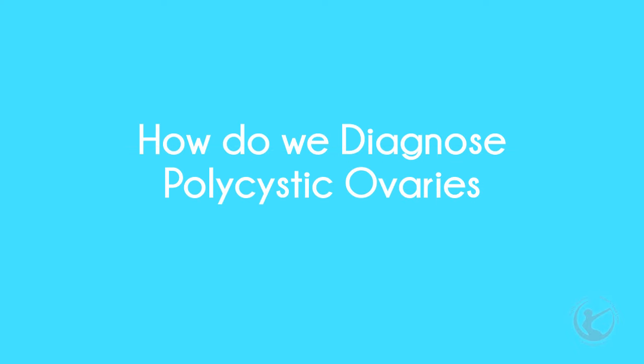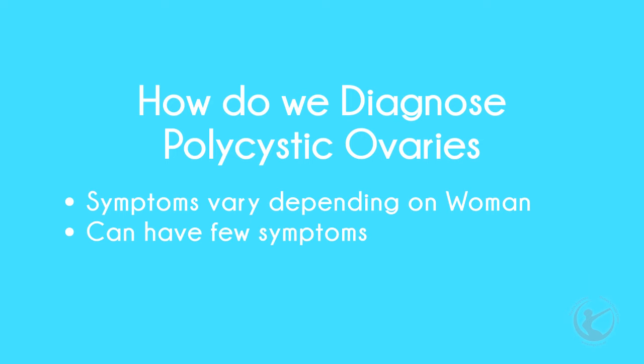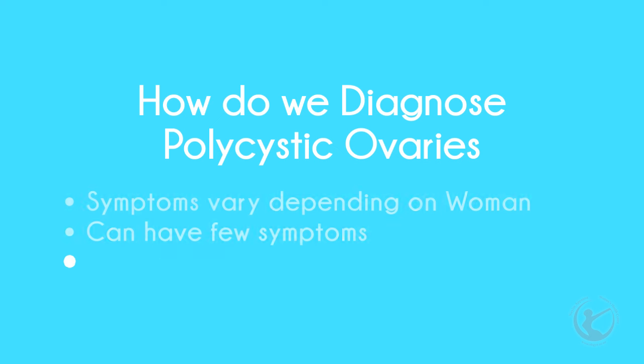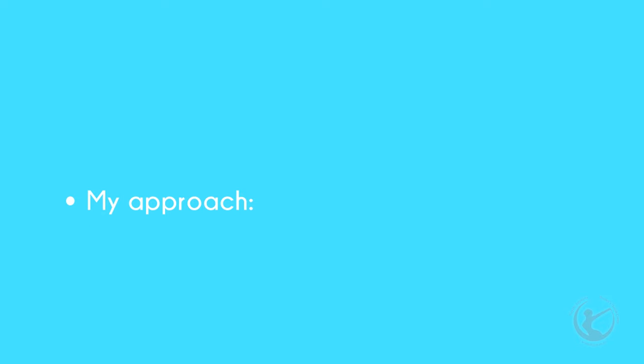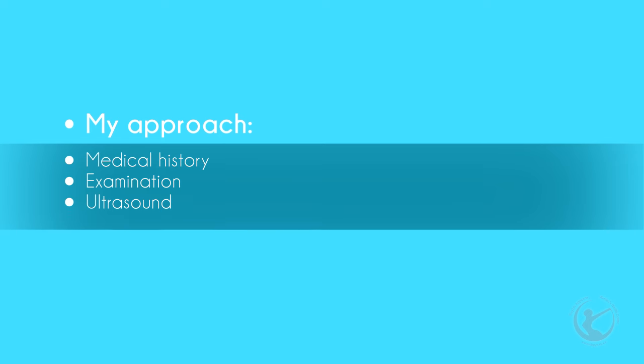How do we diagnose PCOS? There is a large discrepancy in the literature regarding how to diagnose polycystic ovaries. I firmly believe that the disease manifests itself differently in different women, where some people have very little symptoms, others have a few, and yet others have the full-blown disease. My approach is the following: I take a medical history, I do an examination, I perform an ultrasound, and then I arrange for blood tests.